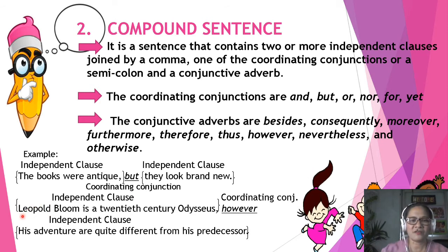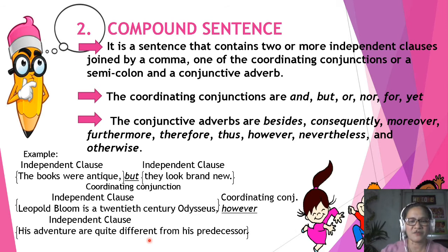Here's another example: Leopold Bloom is a 20th century Odysseus; however, his adventures are quite different from his predecessor. 'Leopold Bloom is a 20th century Odysseus' is an independent clause. 'His adventures are quite different from his predecessor' is another independent clause. It is joined by 'however,' a conjunctive adverb.